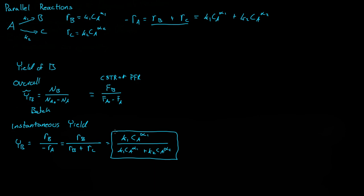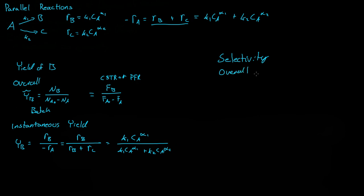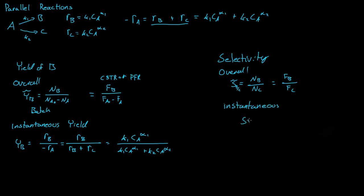Another really important concept is selectivity. There's an overall selectivity — the overall selectivity of B over C is the moles of B divided by the moles of C, and that's for a batch system. If we have a CSTR or plug flow reactor, it would be the molar flow rates of B divided by the molar flow rates of C. For the instantaneous selectivity, S_BC is equal to the reaction rate of B divided by the reaction rate of C.